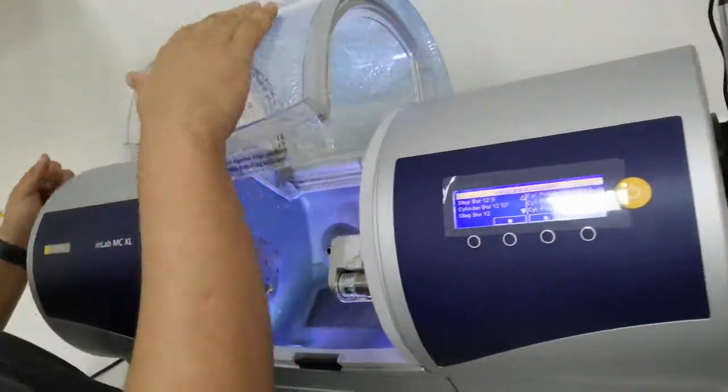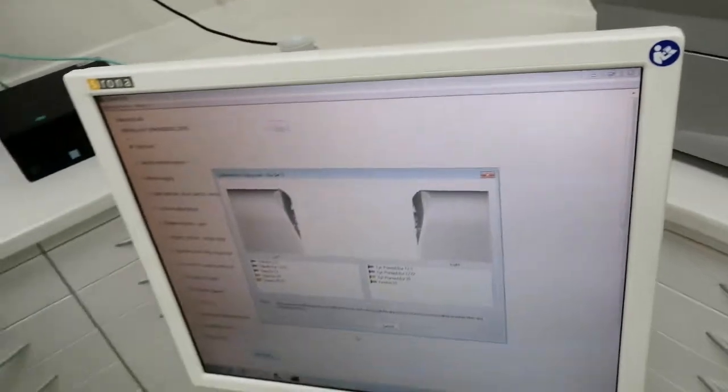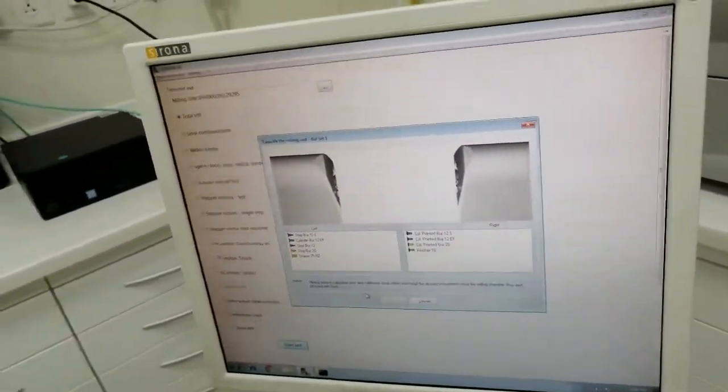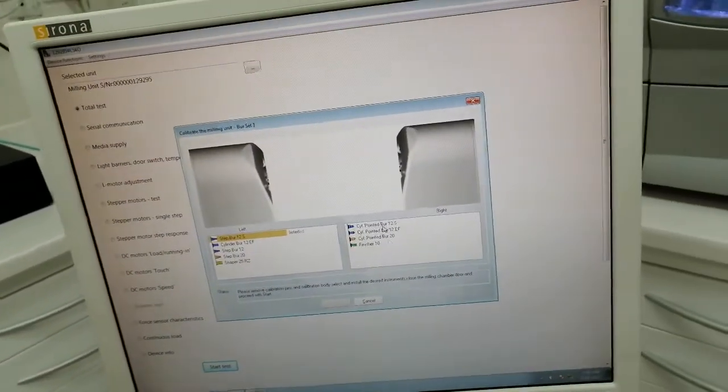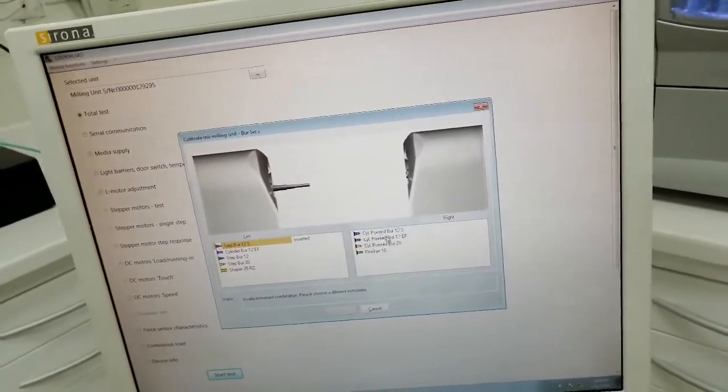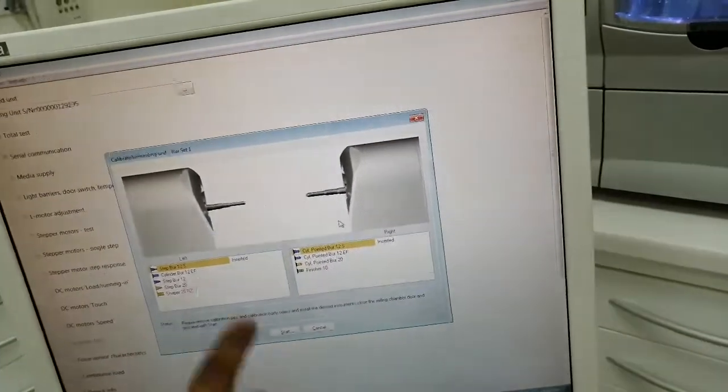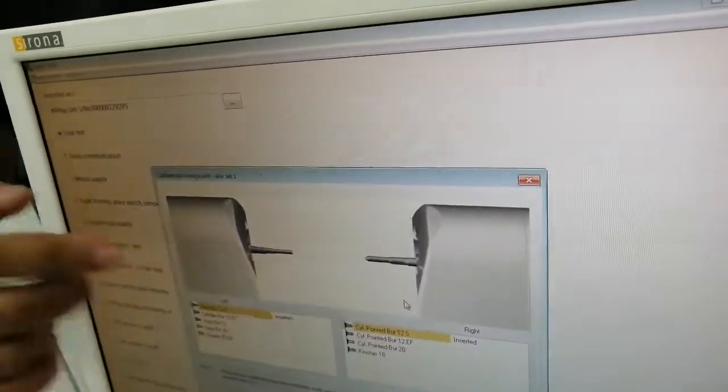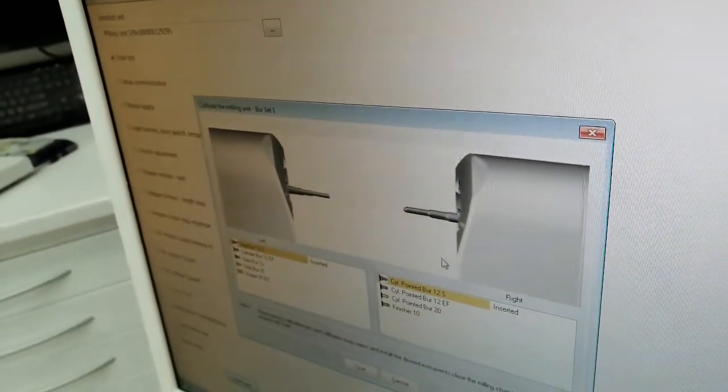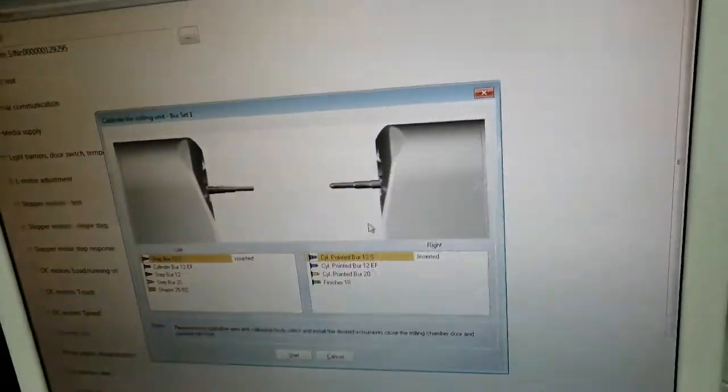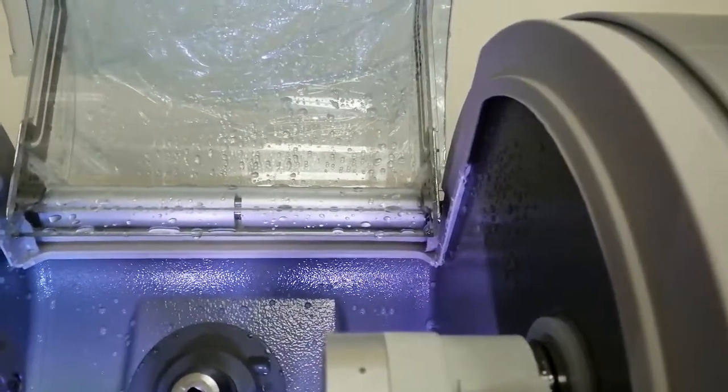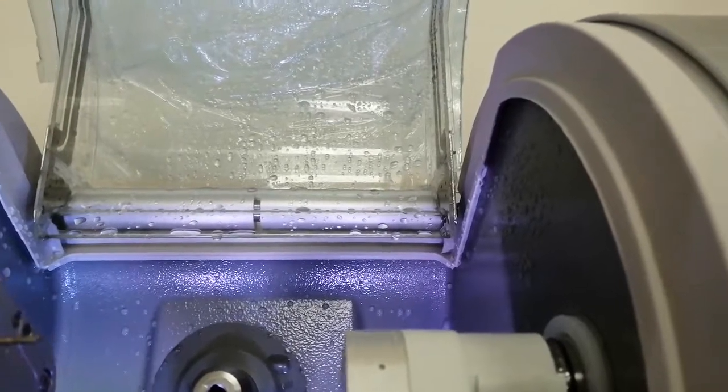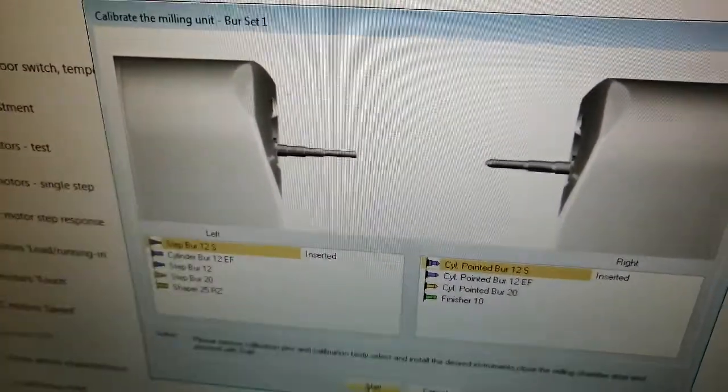We have one more step to choose the type of the bars. From here I select step bar 12S on the left, and pointed 12 on the right. Check the shape here and here with your eyes. It's the same - one, two, three. Here one, two. Here step is cylindrical. Compare them. Same? Yes. Press start.